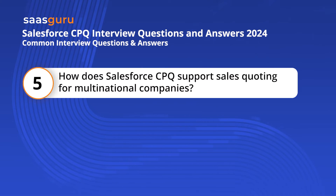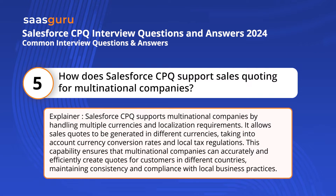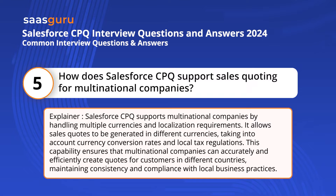Question 5. How does Salesforce CPQ support sales quoting for multinational companies? Salesforce CPQ supports multinational companies by handling multiple currencies and localization requirements. It allows sales quotes to be generated in different currencies, taking into account currency conversion rates and local tax regulations. This ensures that multinational companies can accurately and efficiently create quotes for customers in different countries, maintaining consistency and compliance with local business practices.